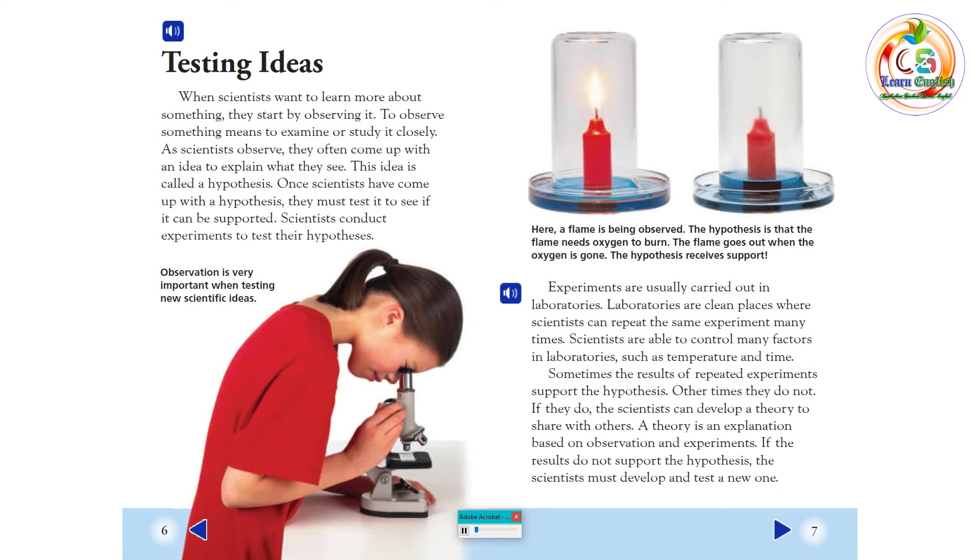Testing Ideas. When scientists want to learn more about something, they start by observing it. To observe something means to examine or study it closely. As scientists observe, they often come up with an idea to explain what they see. This idea is called a hypothesis. Once scientists have come up with a hypothesis, they must test it to see if it can be supported.